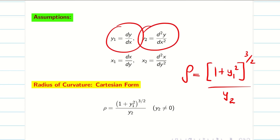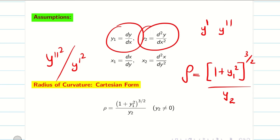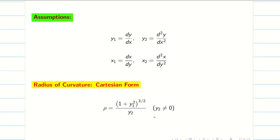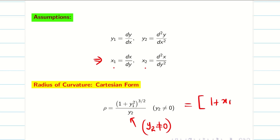Using y1 and y2 notation is more comfortable than y dash and y double dash, avoiding typos or errors. Very important: the denominator y2 should not be zero. If it is zero, we must change the approach — bring x as a function of y, find x1 and x2. The formula then becomes (1 plus x1 squared) to the power 3 by 2, divided by x2.